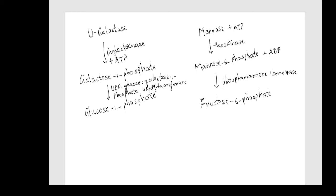Galactose is converted to galactose-1-phosphate by the enzyme galactokinase. Galactose-1-phosphate is again converted to glucose-1-phosphate.